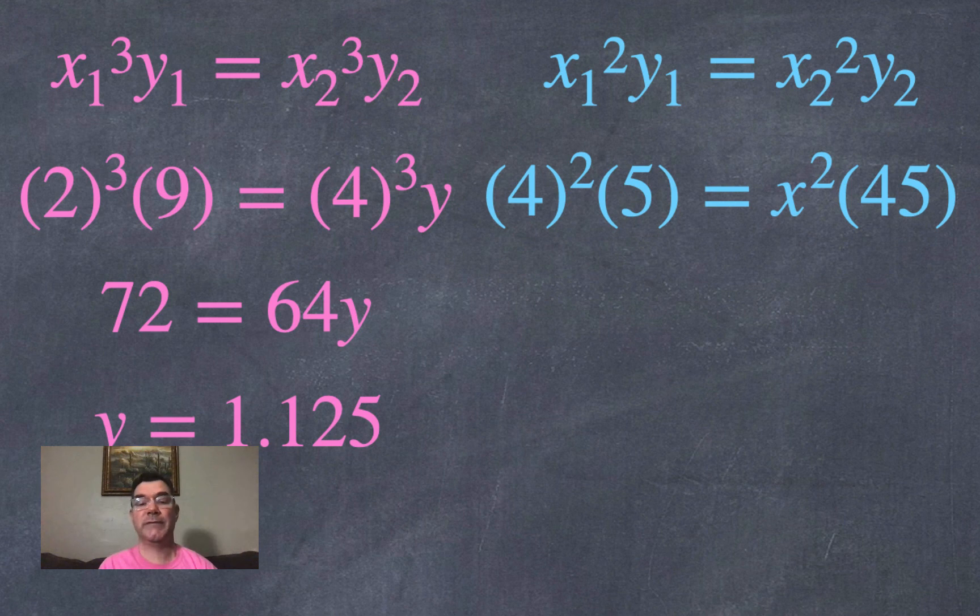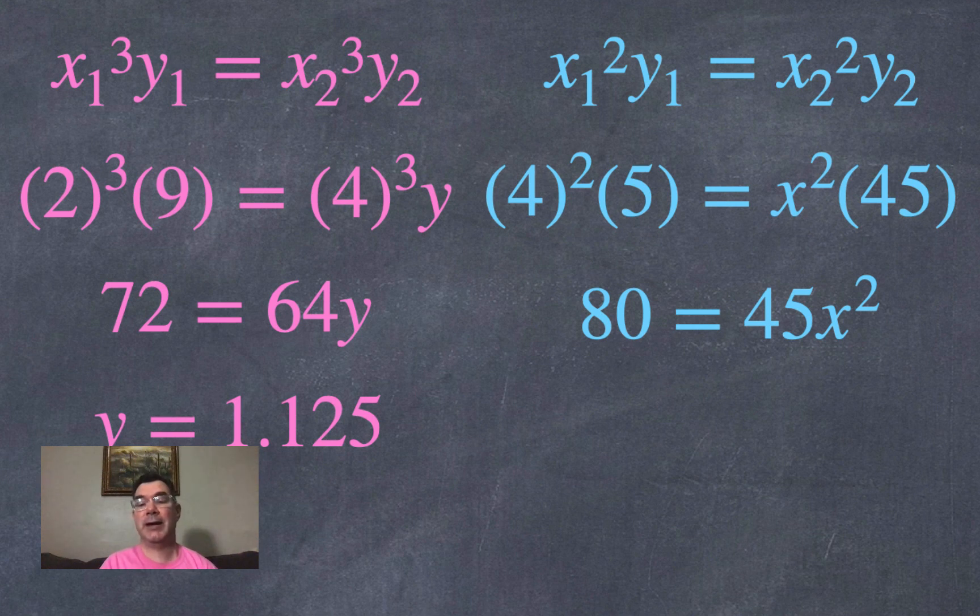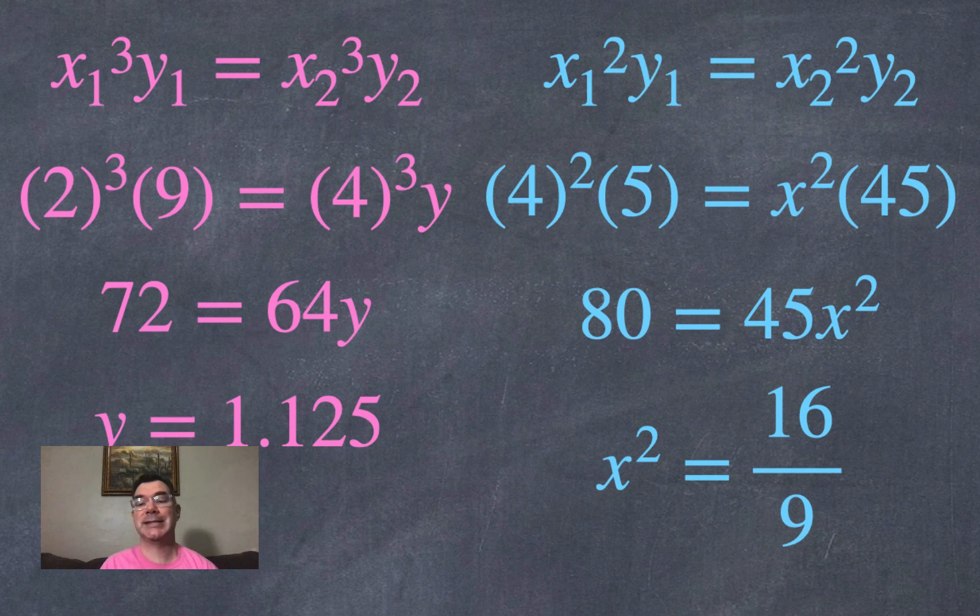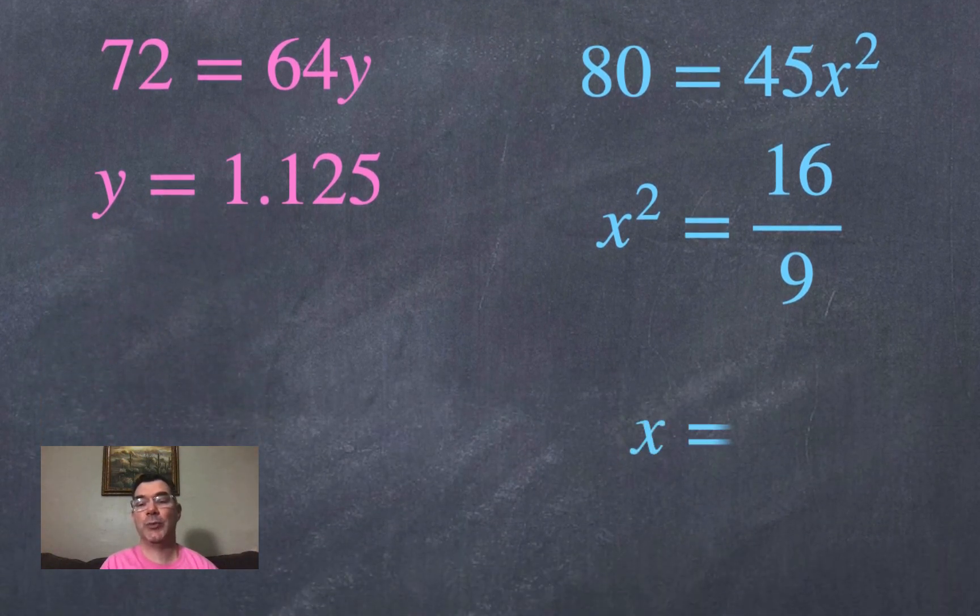I plug in what I know. The first x was 4, the first y was 5, and the second y was 45. I need to figure out what that second x is. So if I simplify both sides I get that 80 equals 45 times x squared. That means that x squared will equal 16 over 9, and if I square root both sides I will get that x equals 4/3.